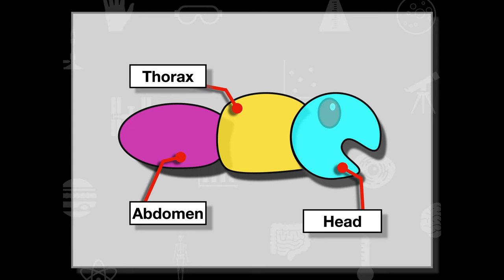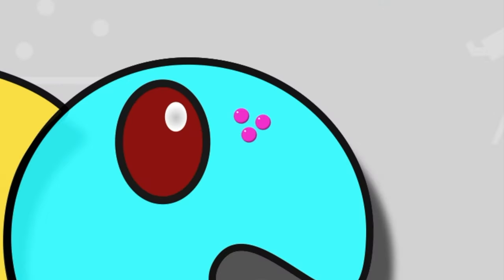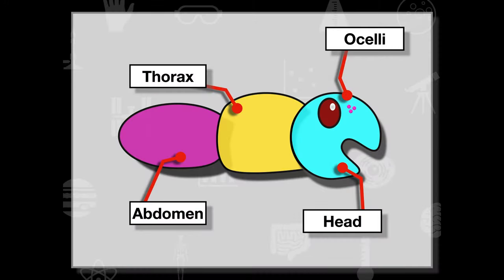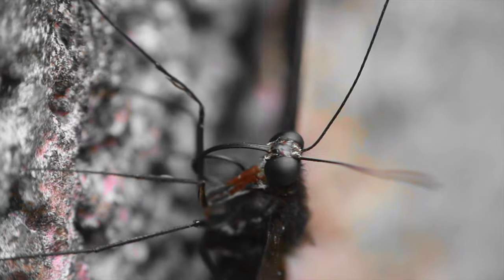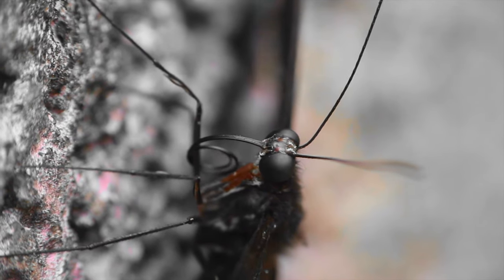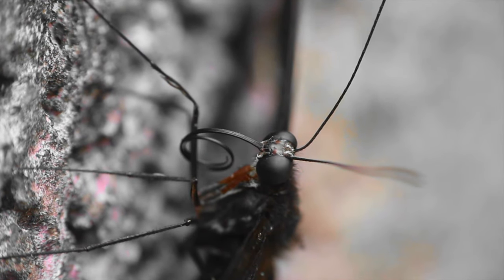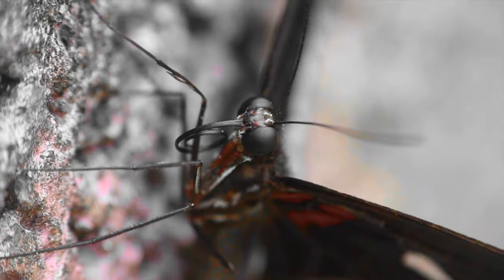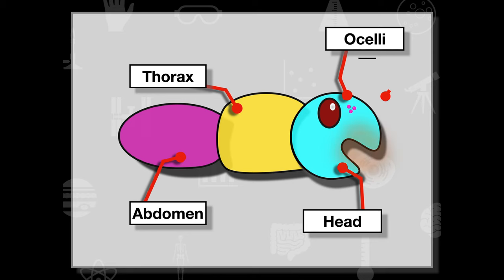On the head we'll see a compound eye and also ocelli. The ocelli are very primitive eyes — simple, primitive light-sensing organs that allow the insect to interact with its environment. The compound eye is more complex by comparison.